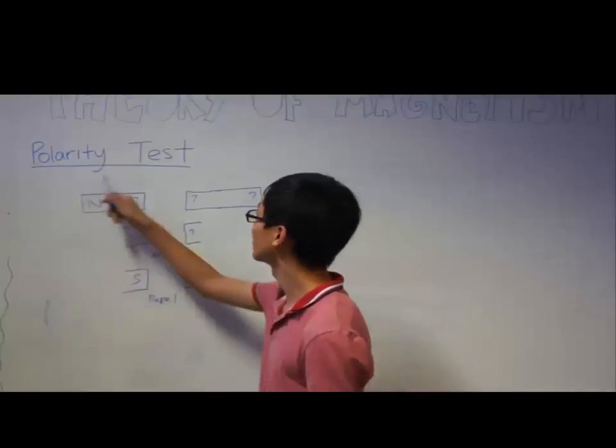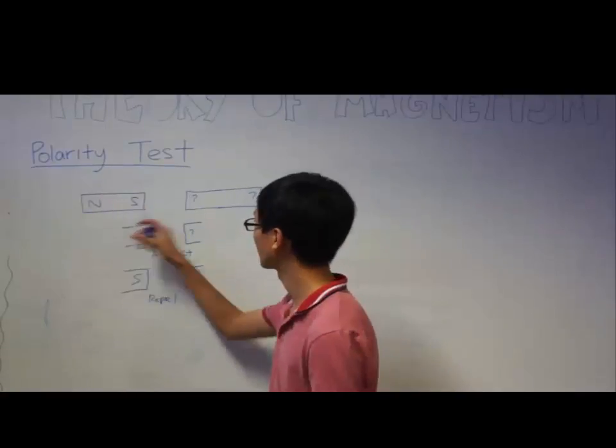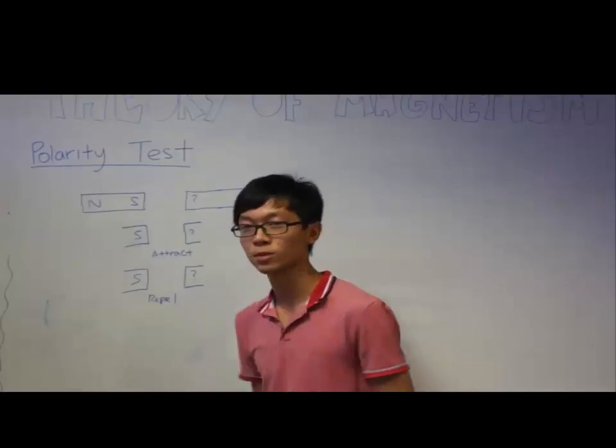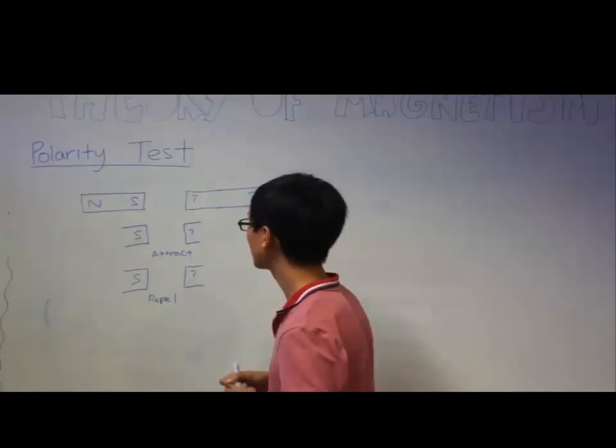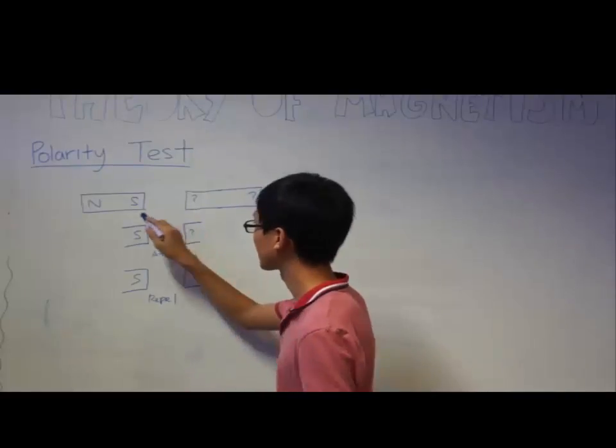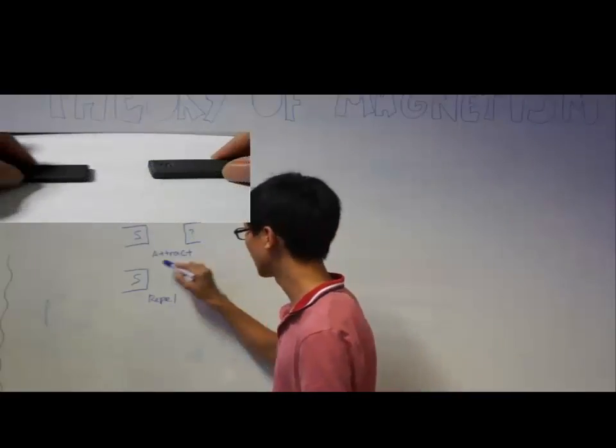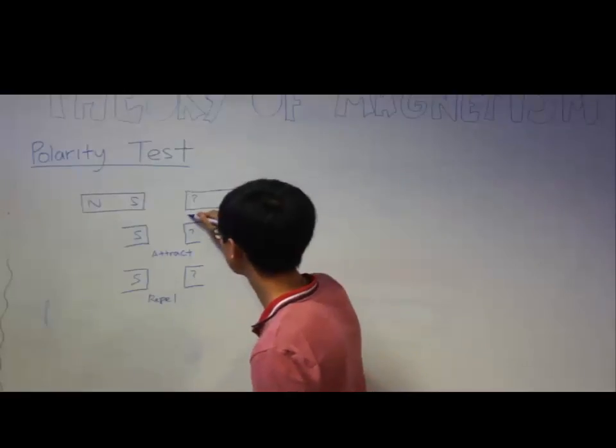Hi guys, we'll be doing the polarity test now. For this situation, you can see there is a known magnet and an unknown magnet. For the unknown magnet, we are not sure what are the poles on both sides. If we get the south pole and that unknown pole, and they attract, we can, from one of the laws of magnetism, prove that this is a north pole.